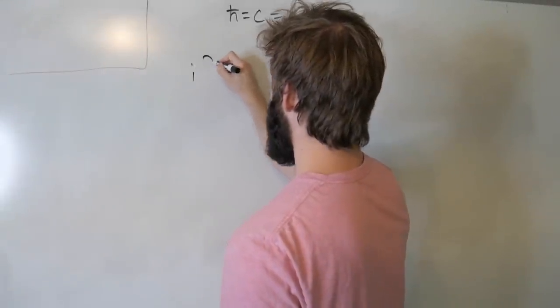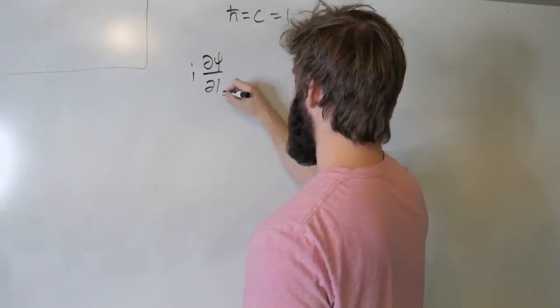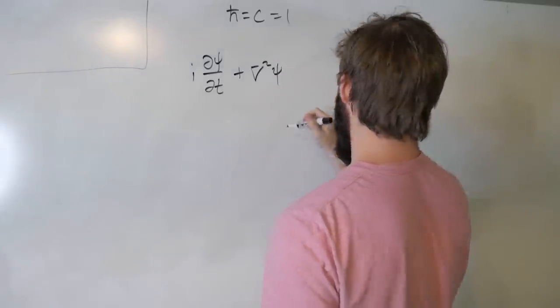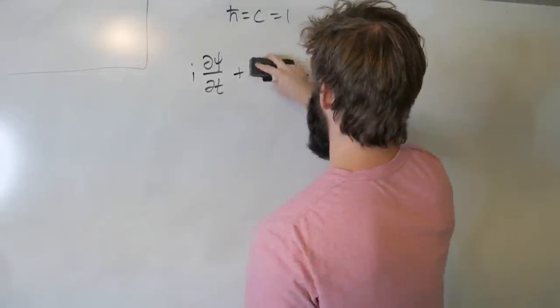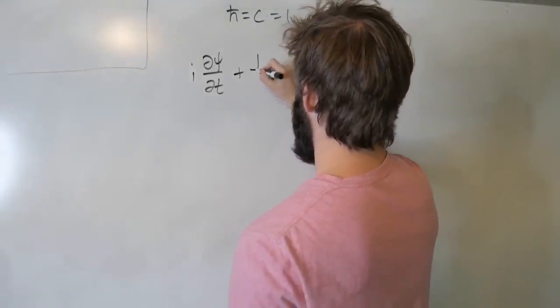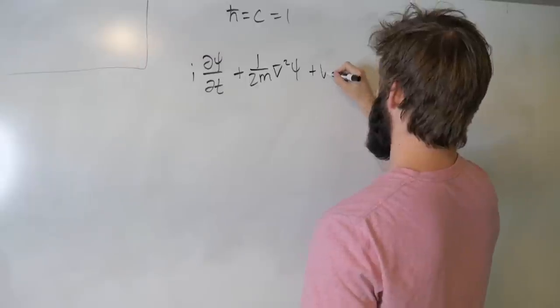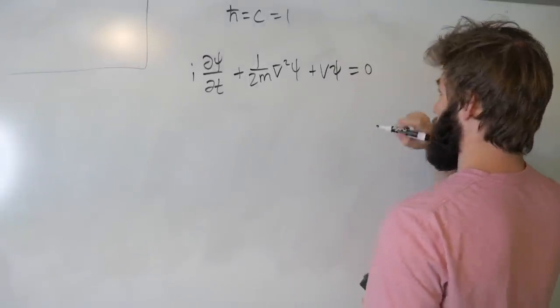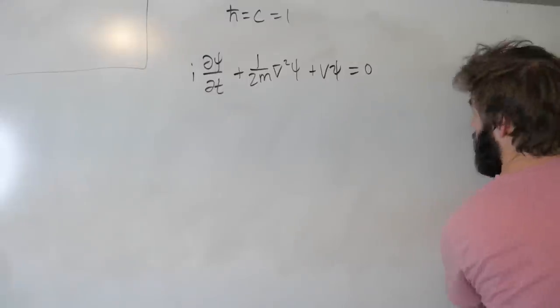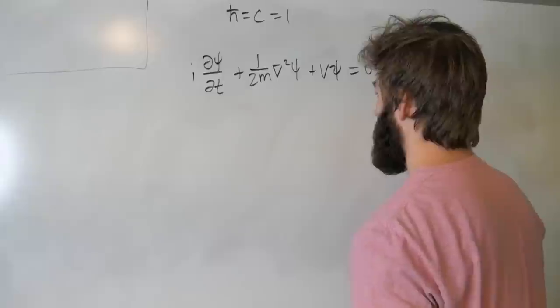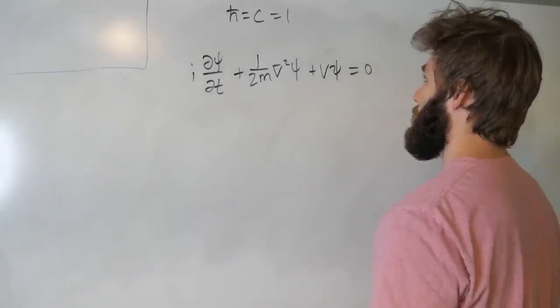Since we're going to be using something that's relativistic and quantum mechanical, those would just be really cluttery. But if you're not used to this kind of notation or this kind of convention, let's start by just writing out the regular Schrodinger equation in natural units.